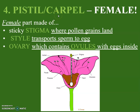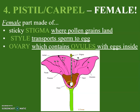The pistil and the carpel are the female reproductive parts. The female part is made of a sticky stigma, which is where the pollen grains land — it's very sticky to catch the pollen. Then there is a style that transports the sperm to the egg. And the ovary at the bottom contains the ovules, which have the eggs inside.